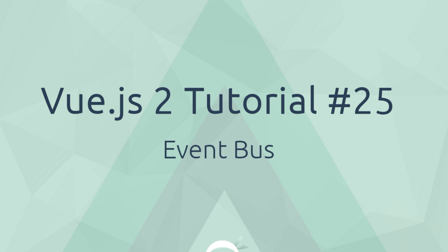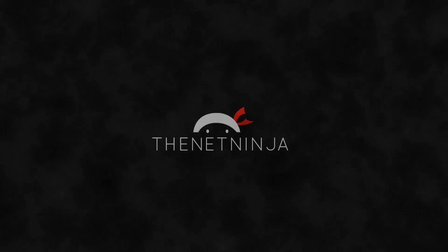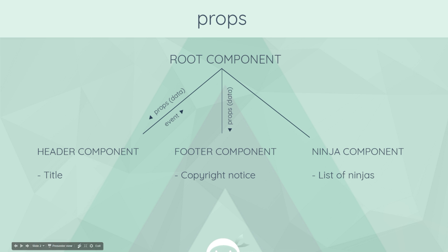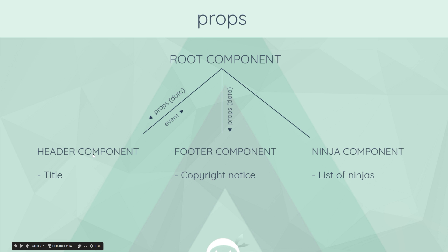Welcome to your 25th Vue.js tutorial. In this video I want to talk about something known as the event bus. In the last tutorial we had a quick look at events and we emitted an event from a child header component up to the root component, which was listening for that event. It reacted by changing some data — the title — and then passed that updated title down as props to both the footer and the header component, which then updated their templates with the new title. What we're essentially doing here is communicating from the header component to the footer component indirectly using the root component. There is an easier way around it: we can use what's known as an event bus, which is just a Vue instance that can emit events and listen to them.